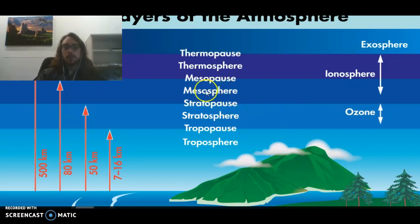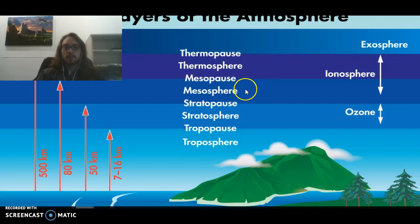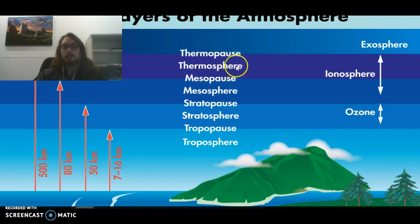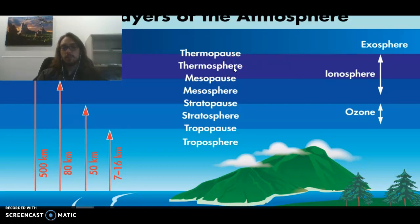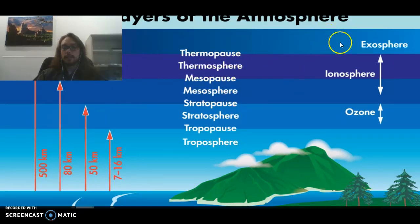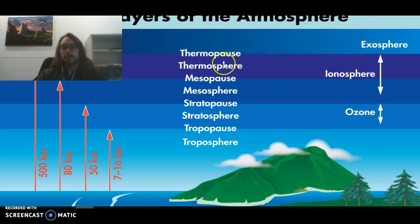Then we've got the mesosphere between the stratosphere and the thermosphere. This is just an in-between area where molecules are getting less and less dense — there are fewer molecules up there. After that, we go to the thermosphere, which is going to be the hottest layer of our atmosphere. It goes into the exosphere, so the thermosphere and the exosphere can almost be intertwined. A lot of scientists don't even really count the exosphere because it's so minute — there are so few particles that we just kind of mold it into the thermosphere.